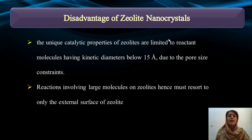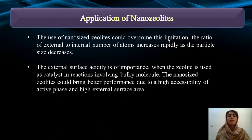Some disadvantages include that the unique catalytic properties of zeolites are limited to reacting molecules having a kinetic diameter below 15 angstroms. Due to pore size constraints, reactions involving large molecules on zeolites must resort to only the external surface. However, the use of nanocrystals could overcome these limitations, as the ratio of external to internal number of atoms increases rapidly as particle size decreases. The external surface acidity is important when zeolites are used as catalysts in reactions involving bulky molecules, and nanocrystals can bring better performance due to high accessibility of the active phase and a high external surface area.